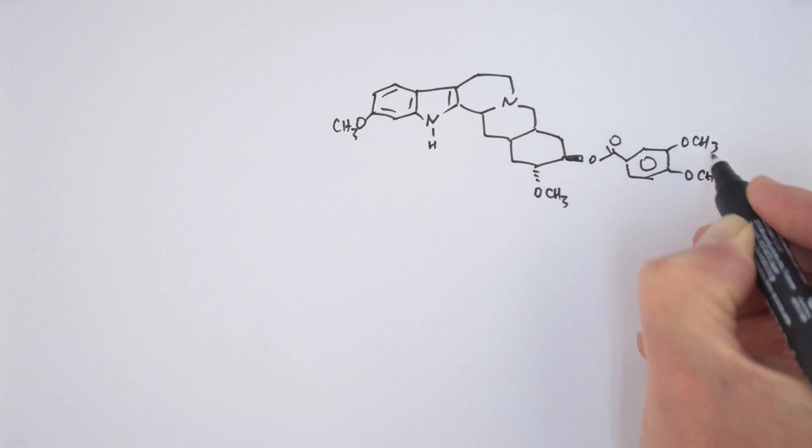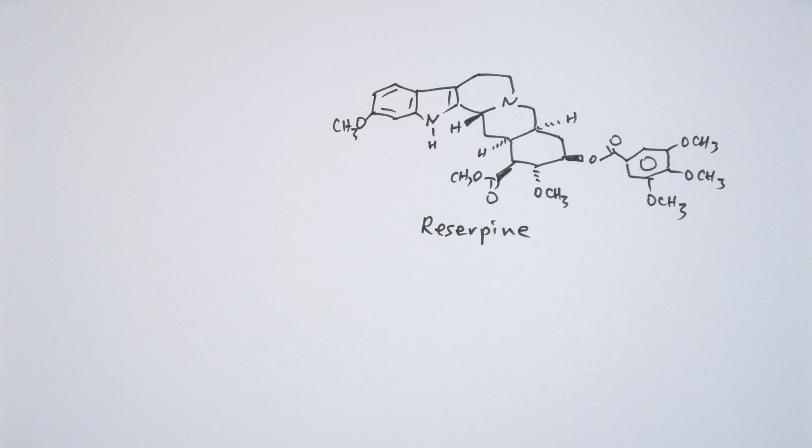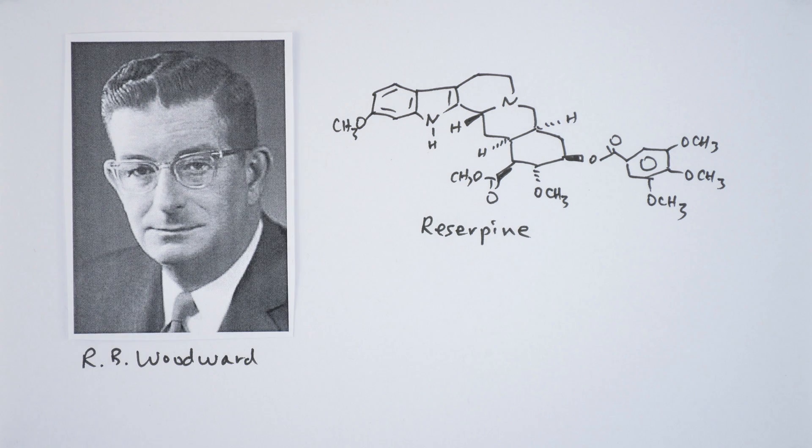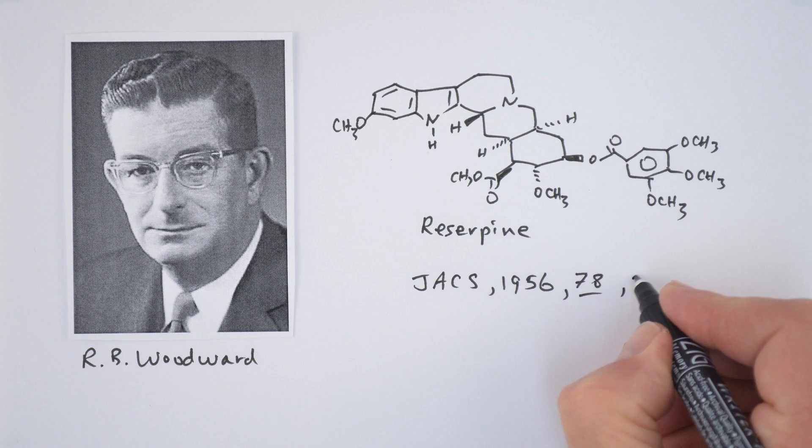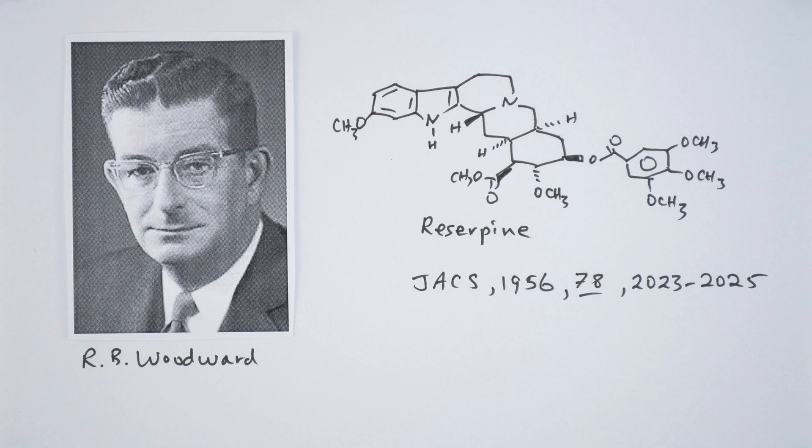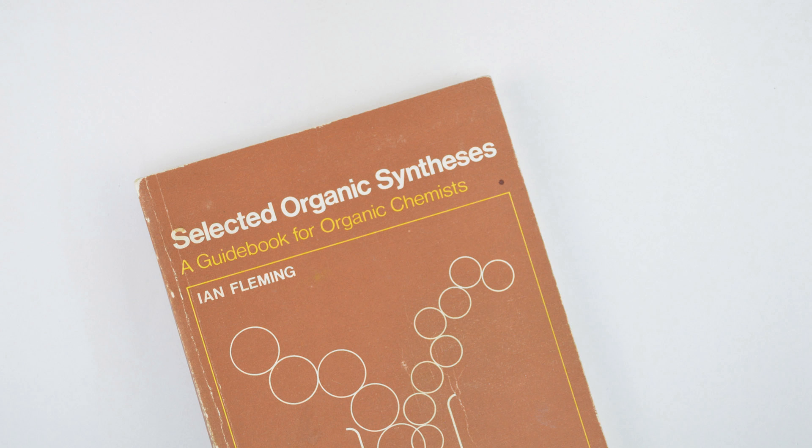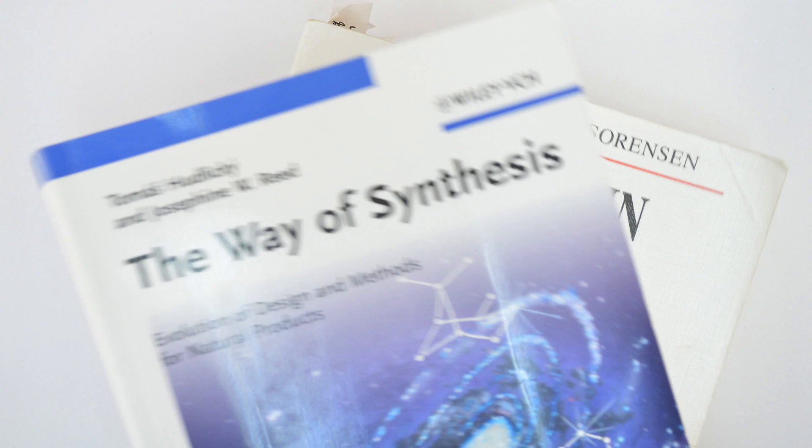One great example of a total synthesis is the synthesis of reserpine by Robert Burns Woodward, a famous organic chemist from Harvard. Woodward's synthesis of reserpine was published in 1956, and although that was a long time ago, the Woodward synthesis of reserpine is so clever and illustrates so many aspects of organic chemistry that it is described in almost every book published on organic synthesis.